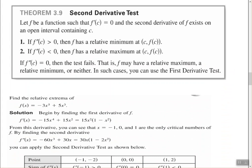The second derivative test: let f be a function such that f prime of c equals 0 and the second derivative exists on an open interval containing c. If f double prime of c is greater than 0, then f has a relative minimum at (c, f(c)) — because concave upward implies a relative minimum. If f double prime of c is less than 0, then f has a relative maximum — because concave downward implies a relative max. If the second derivative test fails, you can use the first derivative test instead, where you find the first derivative, make your intervals, and test on each interval.